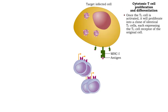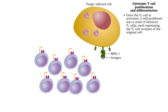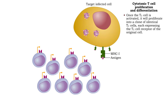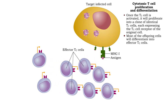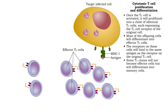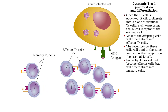Once the cytotoxic cell is activated, it will proliferate into T cell clones, each expressing the receptor of the original cell. Most of these clones differentiate into effector T cells, whose receptors are able to bind to the same antigen as the receptor on the original T cell. Some of the T cell offspring will not become effector cells, but remain as memory T cells, which will respond rapidly upon future exposure to the same antigen.